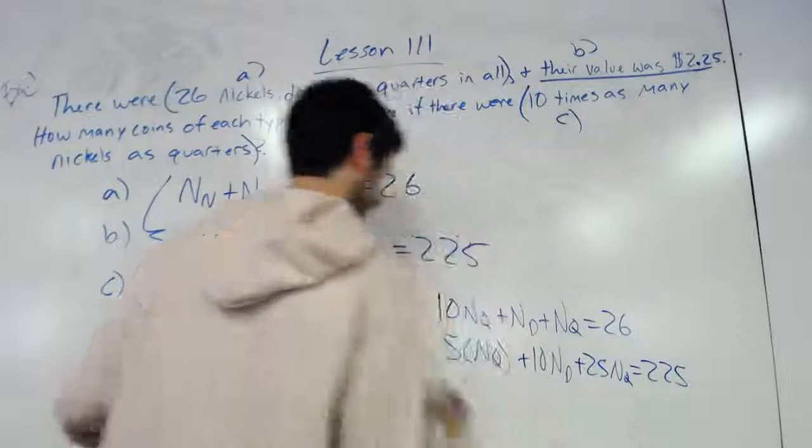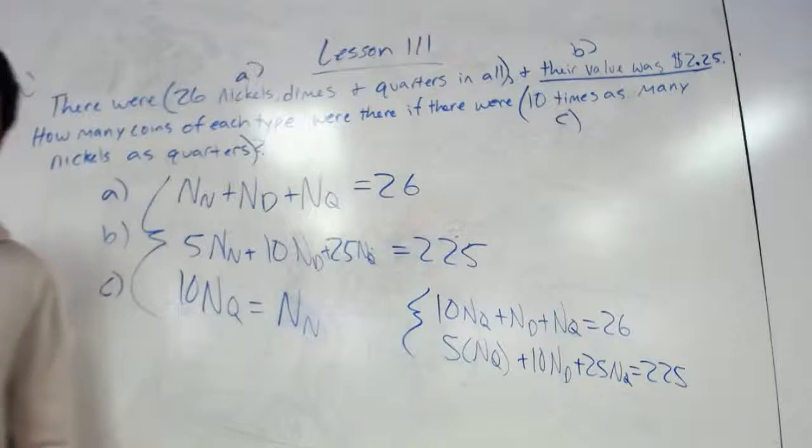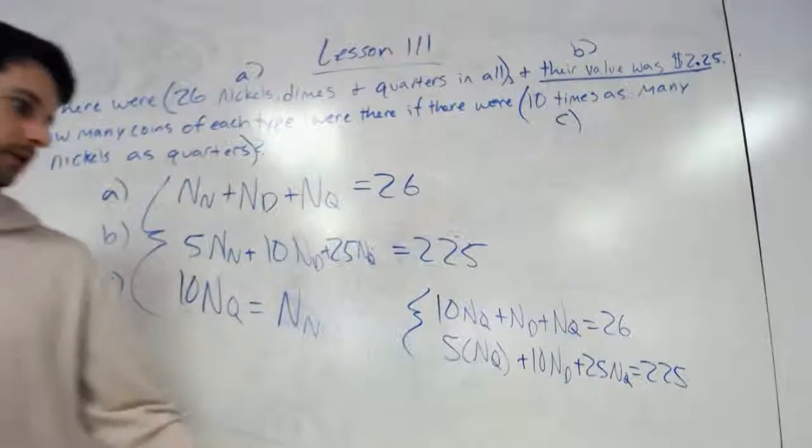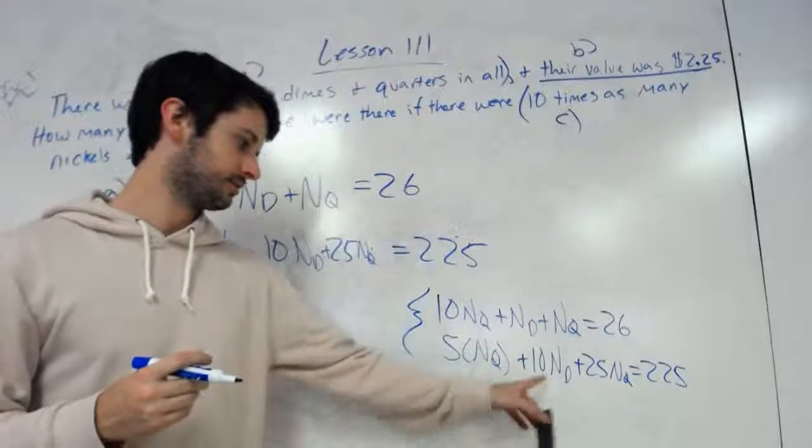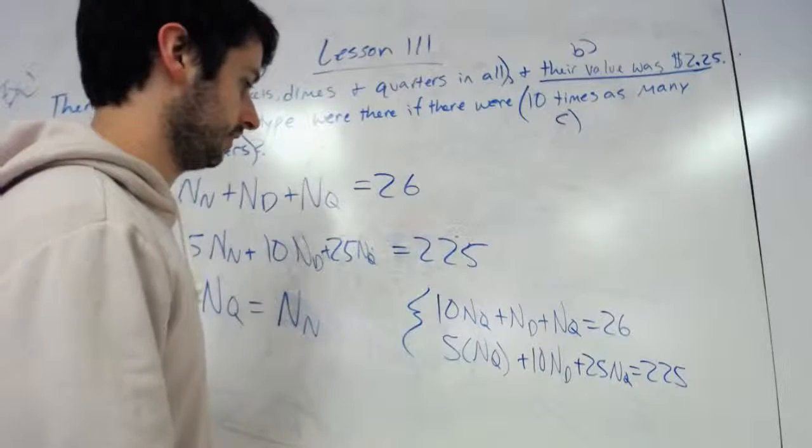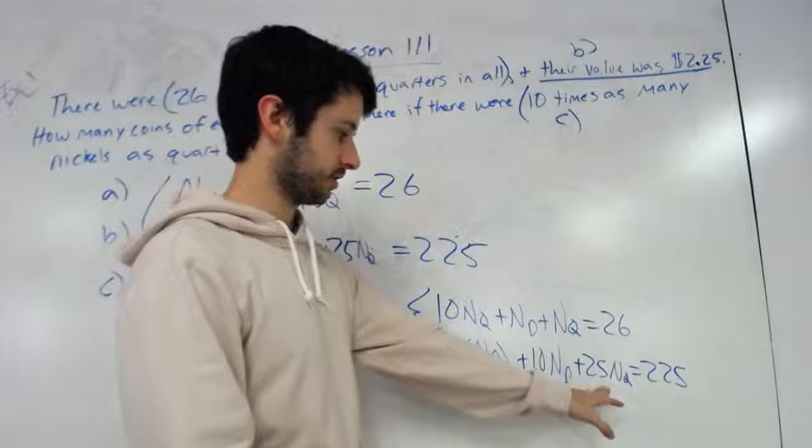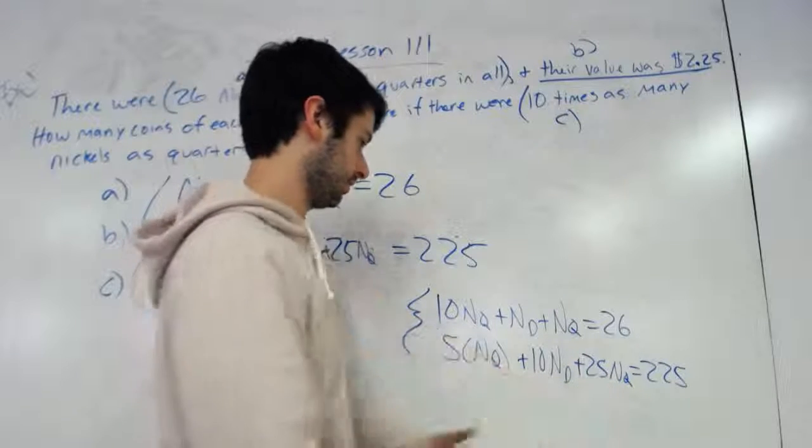And then 5 times the number of quarters equals that. And now because I only have two variables, quarters and dimes, I can solve for these. So 5 times the number of quarters plus 25 times the number of quarters would be 30.